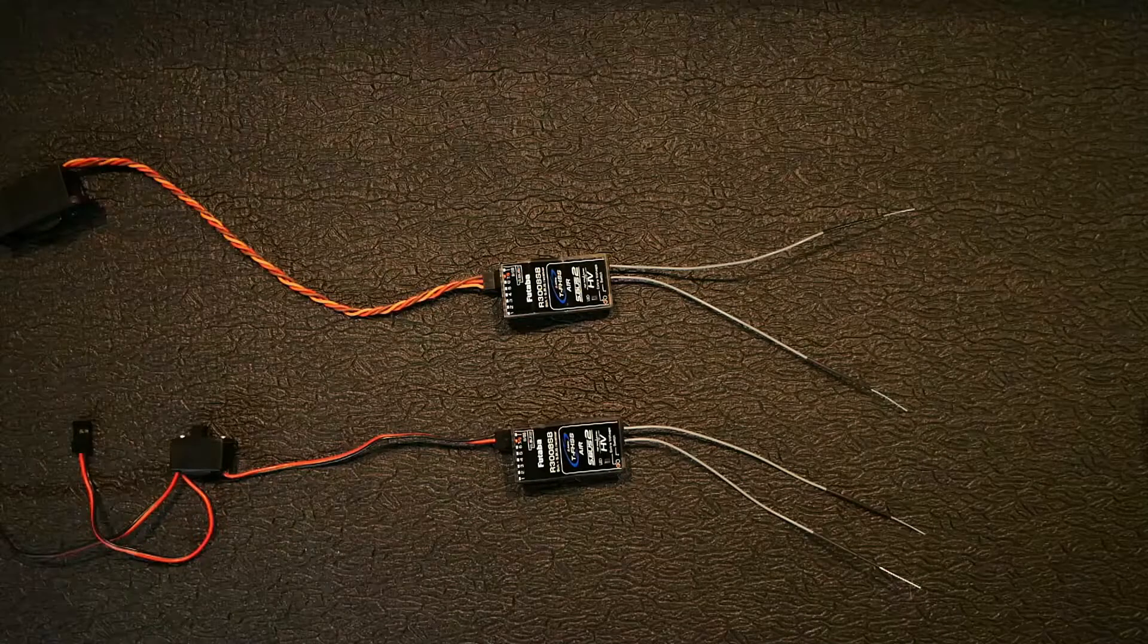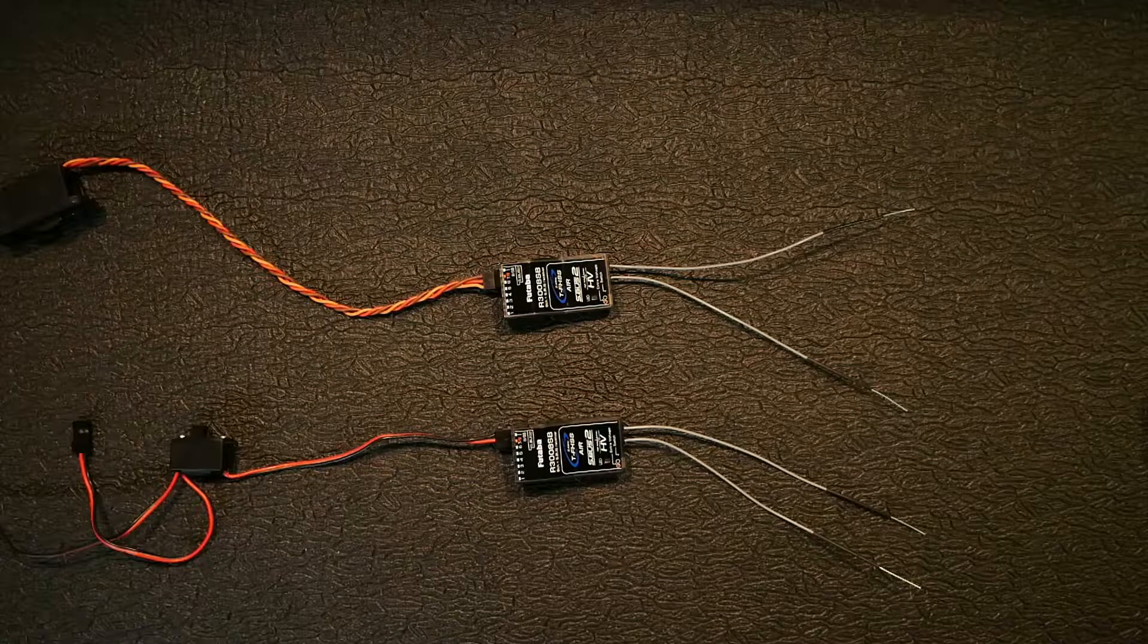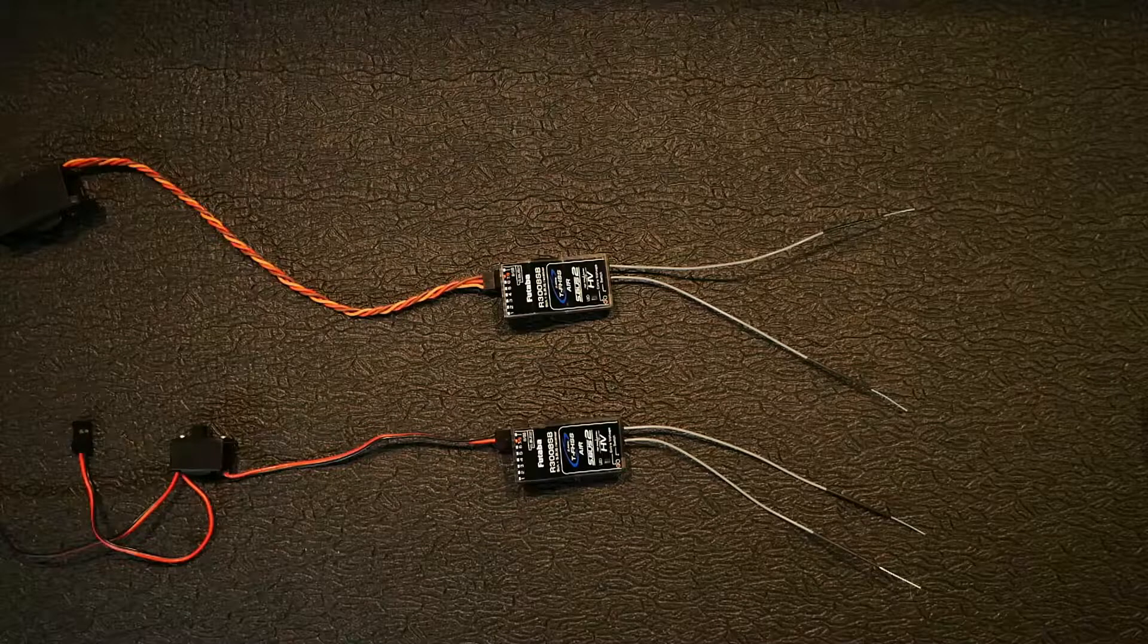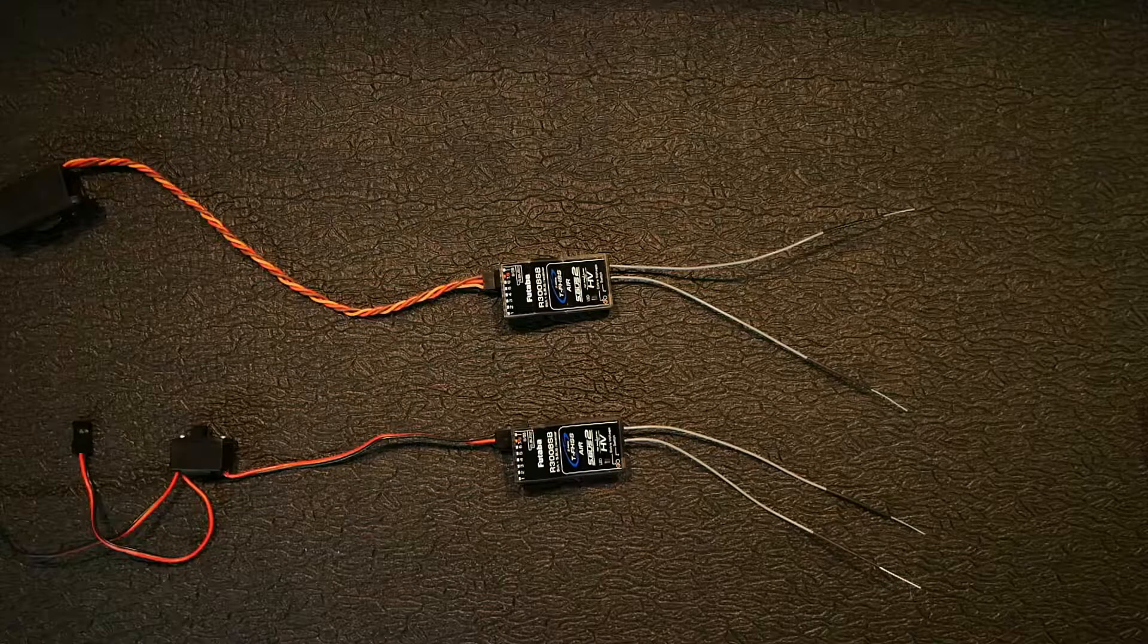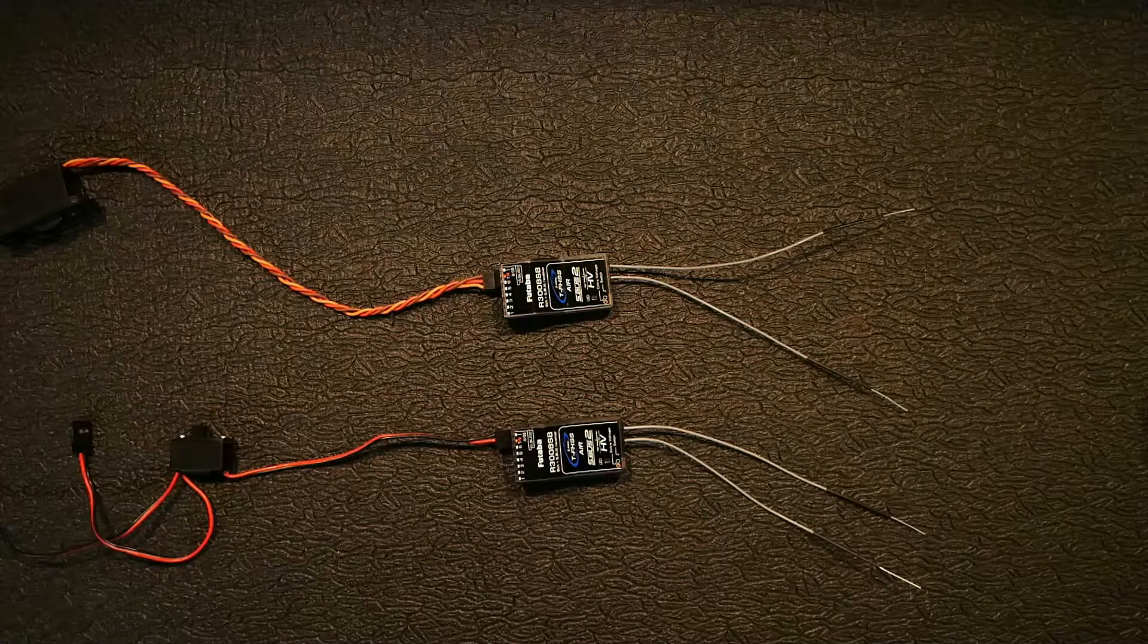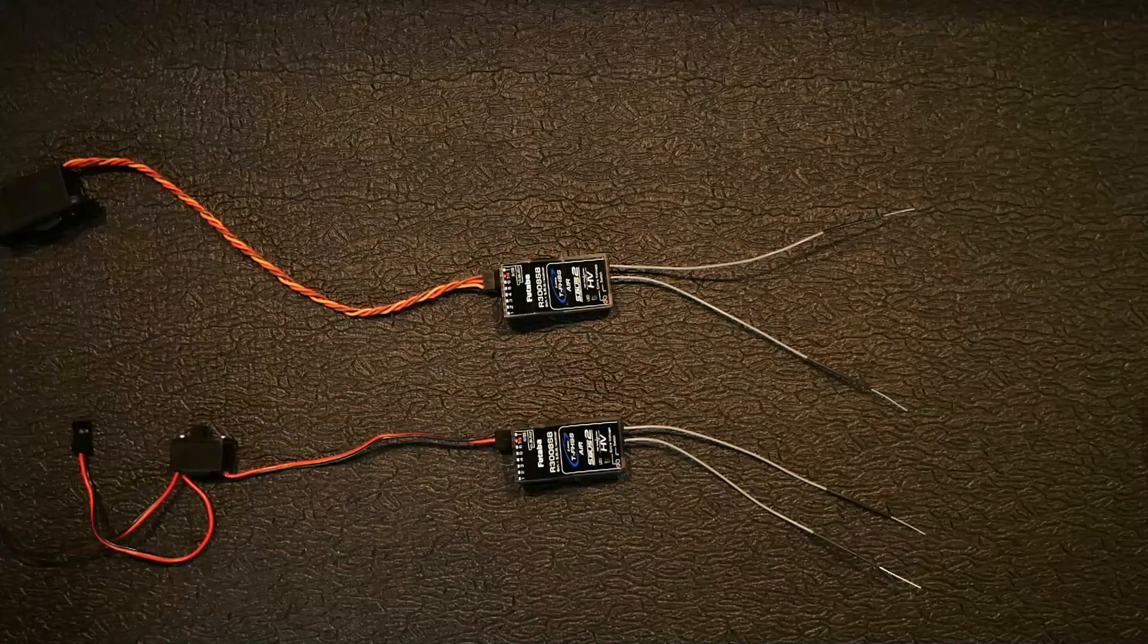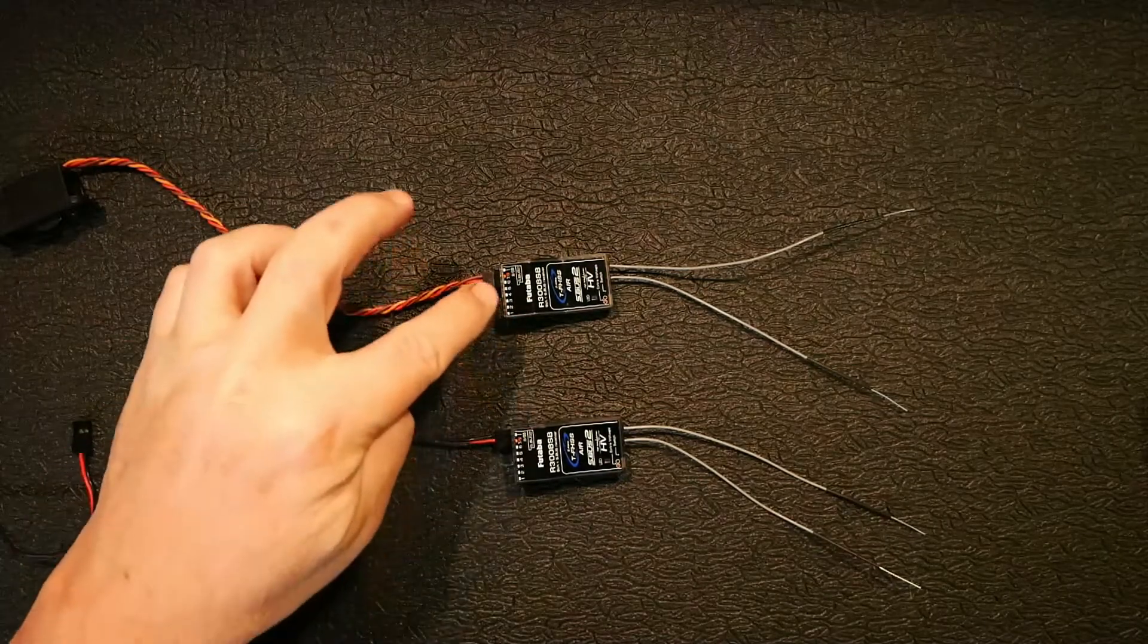Setting the channel modes on a Futaba receiver is one of the most important steps and you got to know how to do it and you got to know which to select for what particular setup that you want to use. Basically the channel mode changes the channel allocations and tells you which ports are going to which channel.